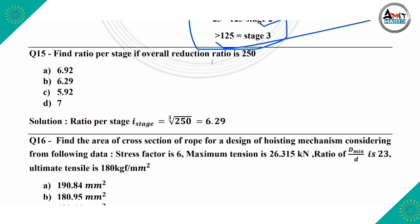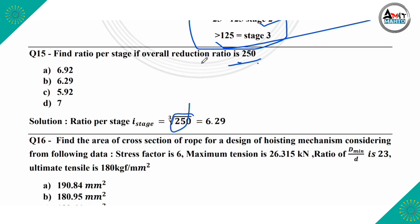Next question: find the ratio per stage if the overall reduction ratio is 250. The options are 6.92, 6.29, 5.92, and 7. The formula for ratio per stage is the cube root of the overall reduction ratio. So the cube root of 250 = 6.29. Therefore the correct answer is option B, which is 6.29.